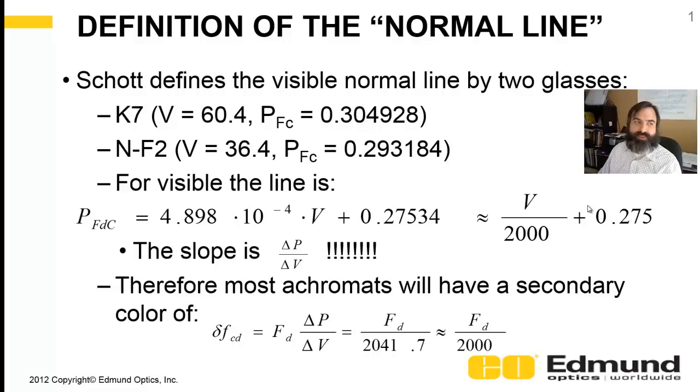Hi, this is post-edit. This slide was at first done incorrectly, so I've modified this particular video to update this. Let's talk about the definition of the normal glass line on the partial map. Schott defines this normal line by two glasses, K7 and NF2. K7's at an Abe of 60, and the partial at FC is 0.305, whereas N-F2 is an Abe of 36.4, and a partial, FC partial, of 0.293. Using these two data points, if I did my equation for a line correctly, this partial line is roughly 5 times 10 to the minus 4 times Abe plus 0.275, or just approximate it, Abe divided by 2,000 plus 0.275.